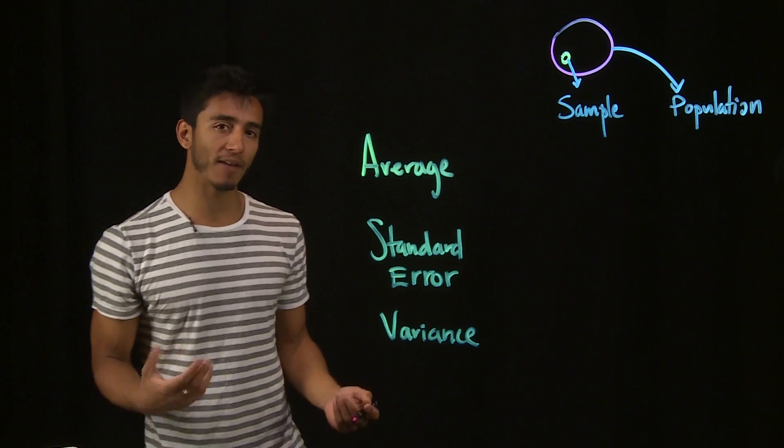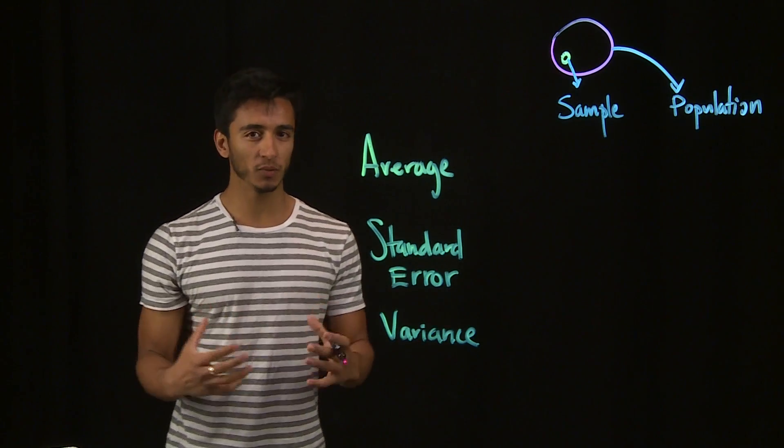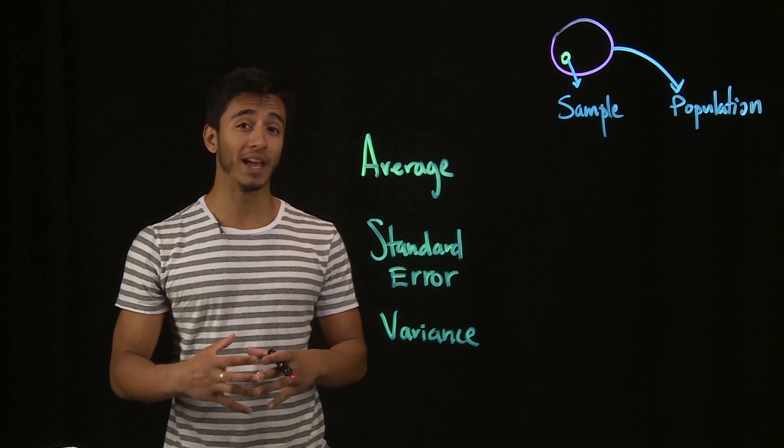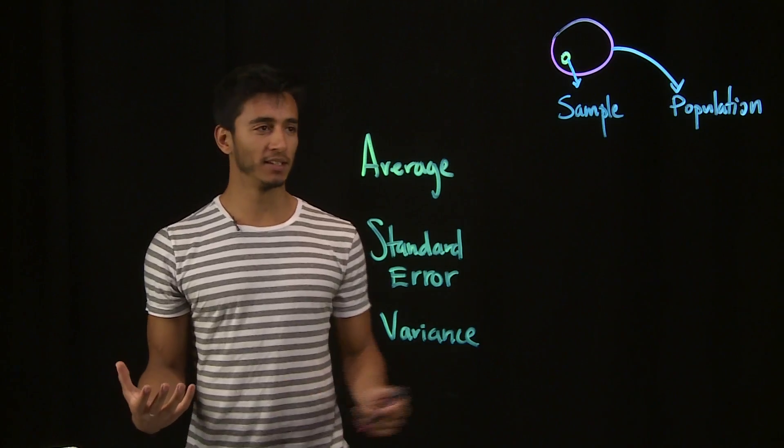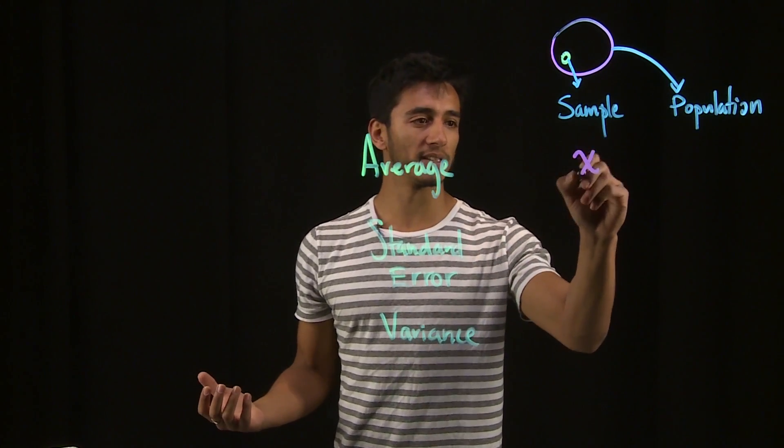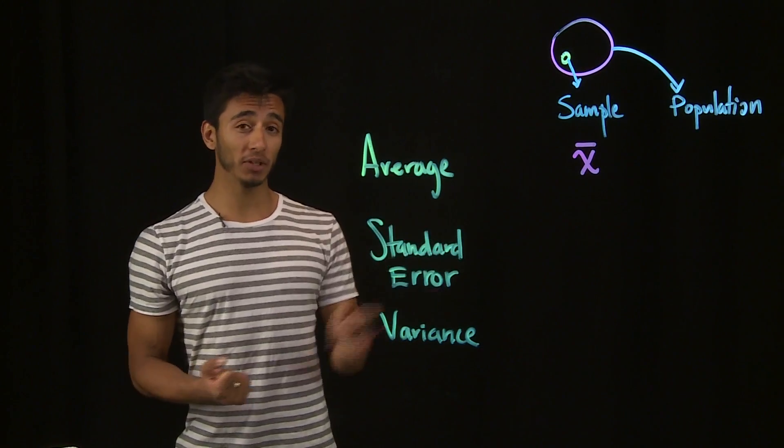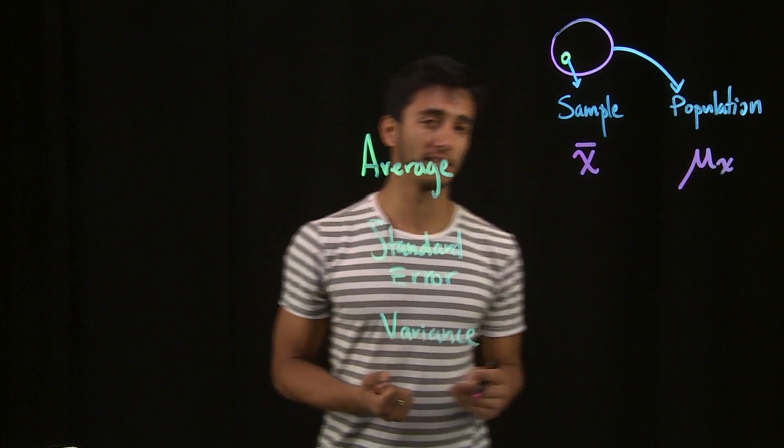So how do we represent average in the context of a sample? Say we're dealing with a population and a sample of x. What would be the sample average of x? That would just be x bar. Now, the average for a population would be mu of x.